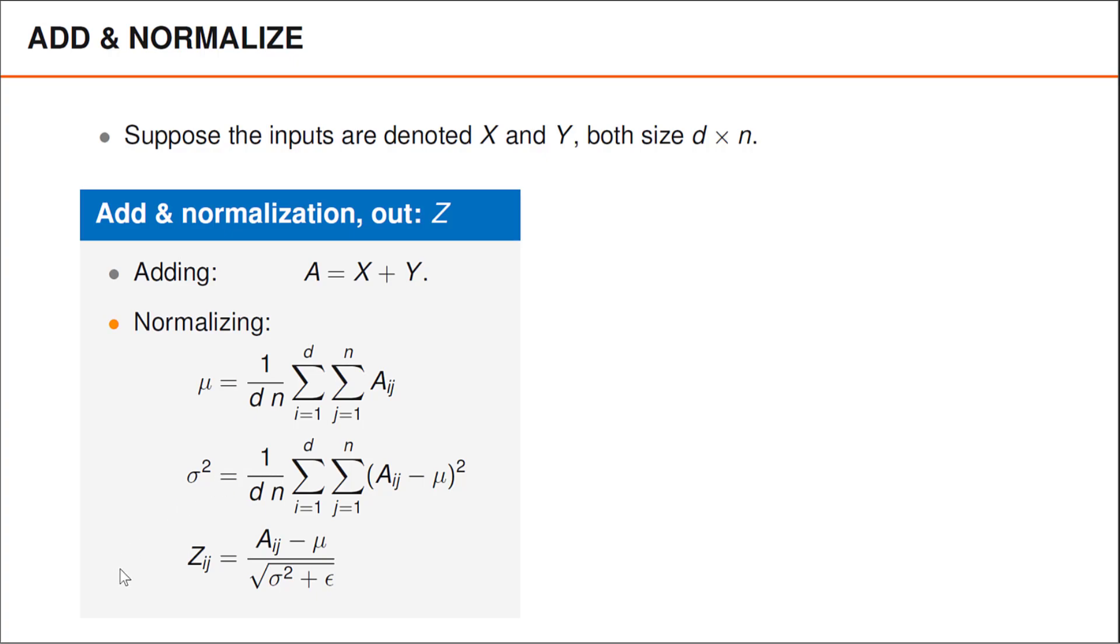Finally, we obtain the output Z by normalizing A. That is, we subtract the mean and divide by the standard deviation, while possibly adding a small number epsilon for numerical stability. You should, of course, ask yourself why we do this.